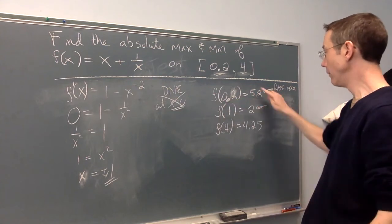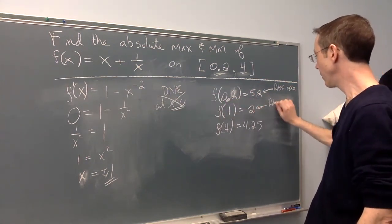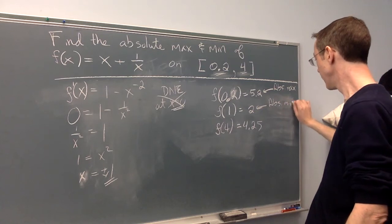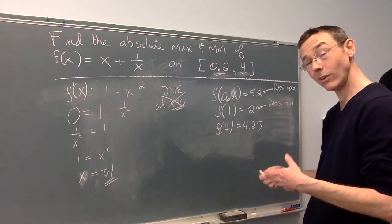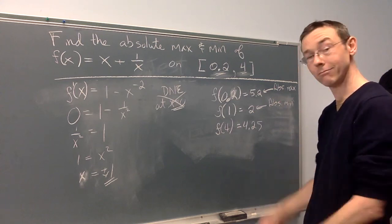Similarly, of these three numbers, this is the smallest. This is the absolute min. We say that the absolute minimum value of the function is 2. It occurs at x = 1. That's it.